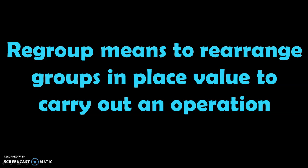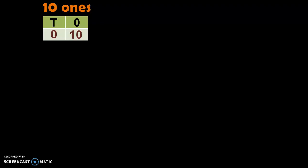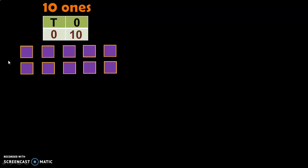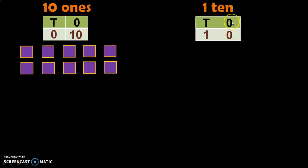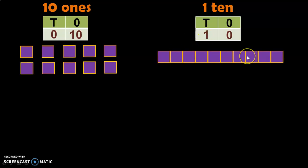Let us do some examples to understand regrouping better. Consider the example of 10 Ones. When you write it in the place value chart, you have 10 in the Ones place and 0 in the Tens place. But 2 digits can never be in a single place value, so we have to regroup. We know that 1 Ten is equivalent to 10 Ones. So when you write it in the place value chart, you will have 0 in the Ones place and 1 in the Tens place.